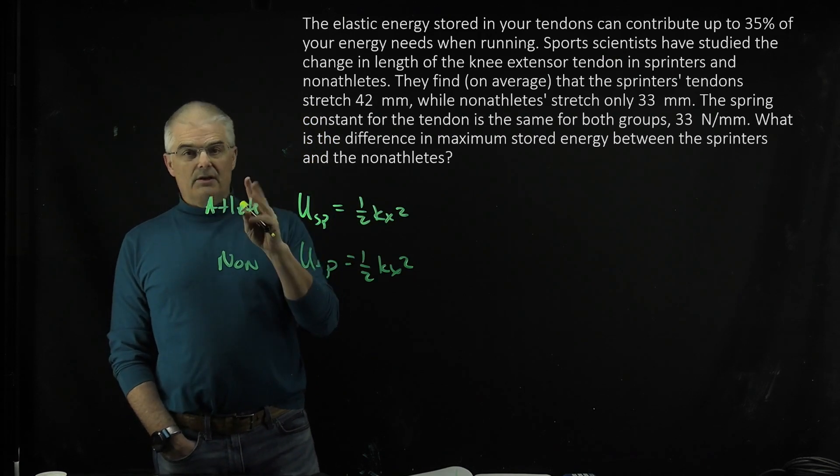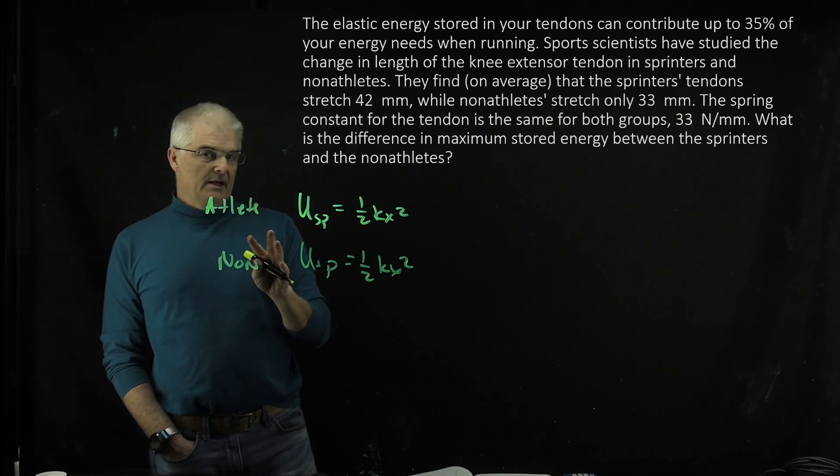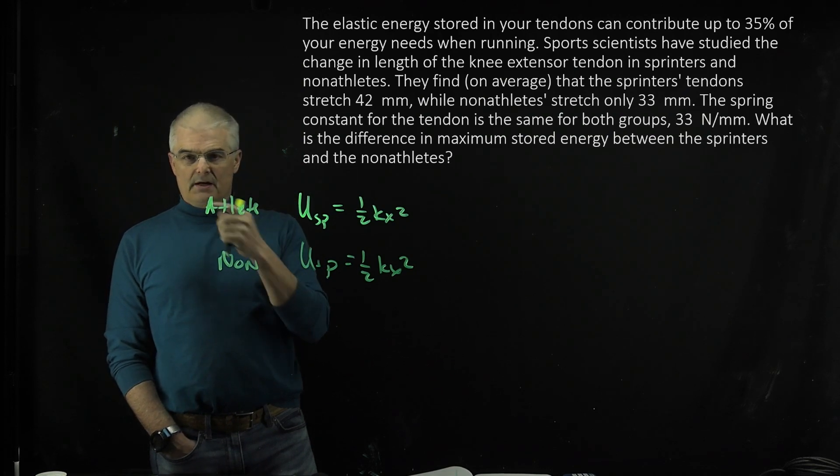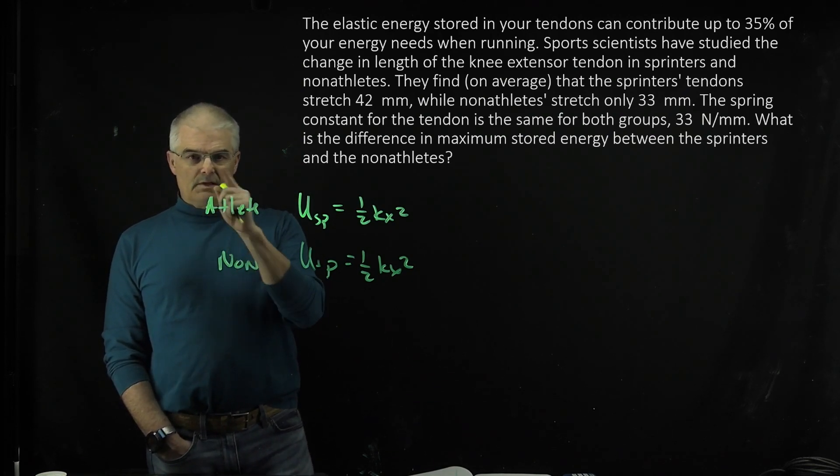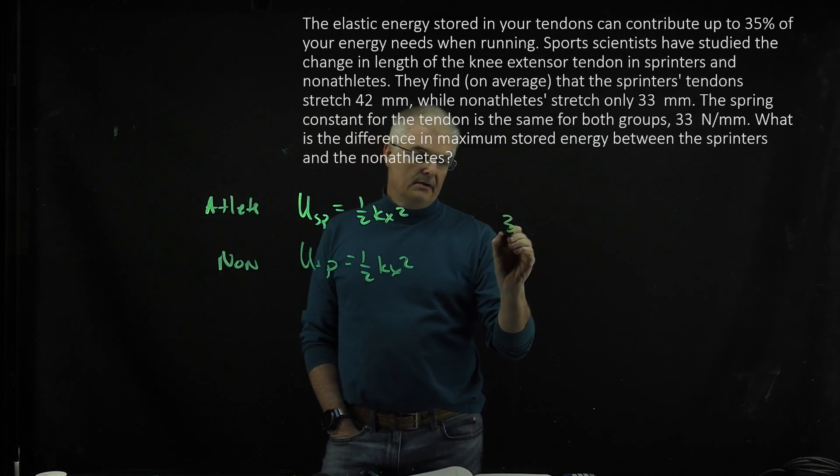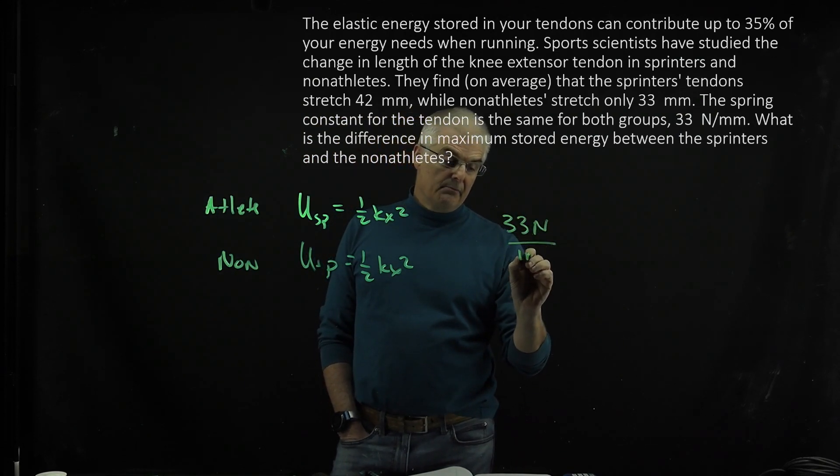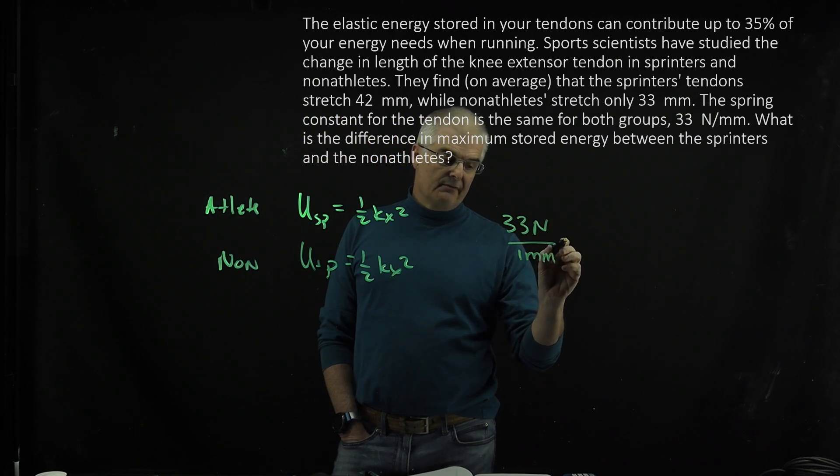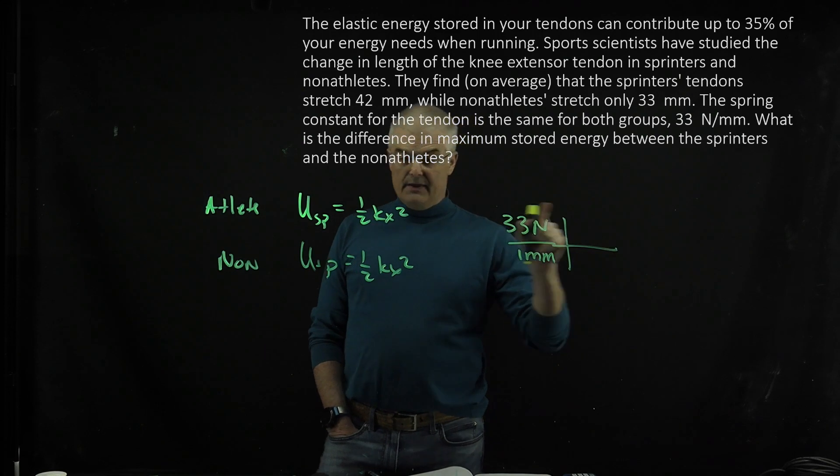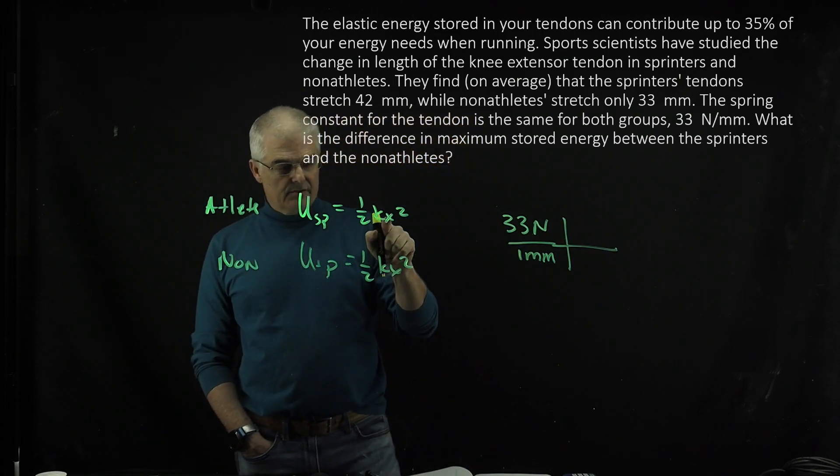Now, warning, you've got crazy weird units going on. If you look at the spring constant, it's 33 newtons per millimeter. You're going to want to convert that to newtons per meter. And then you have to convert the x's to meters. They're both in millimeters.